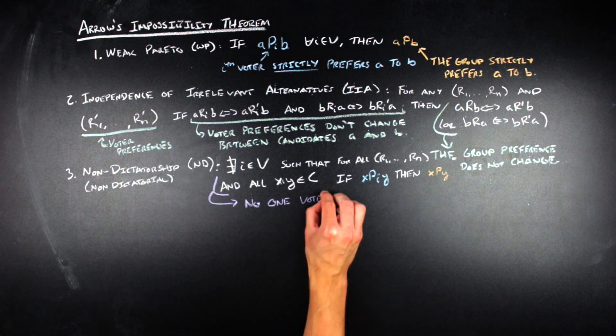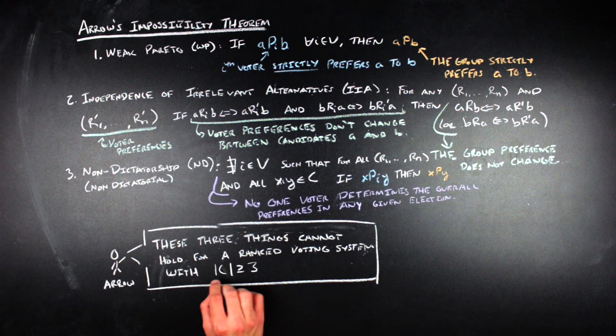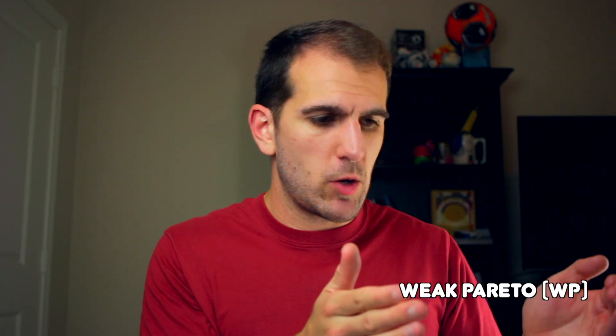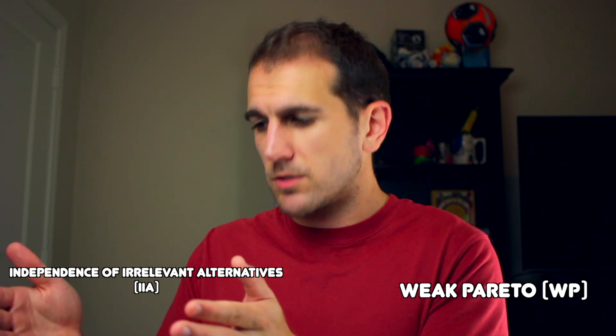And lastly, three, it's non-dictatorial or non-dictatorship — so no single voter possesses the power to always determine the group's preferences. These three properties are just some mathematical formalizations of fairness criteria, or things that we want a particular voting system to have to say that a given election was fair in accounting for the preferences of all of the voters. Usually, the case of Arrow's Impossibility Theorem discussed most often is people focusing on when you force the weak Pareto property and the independence of irrelevant alternatives property and then generate a dictator from all of that information.